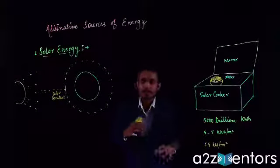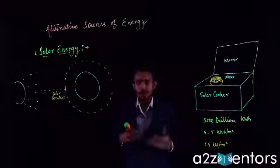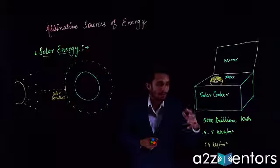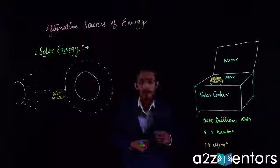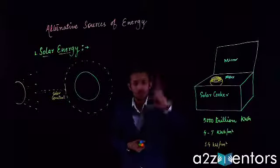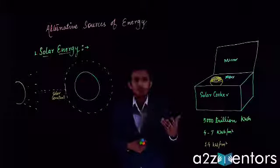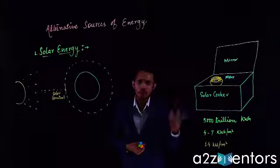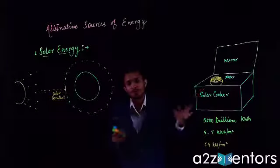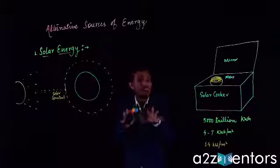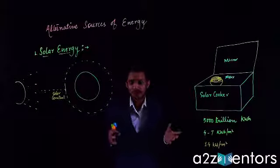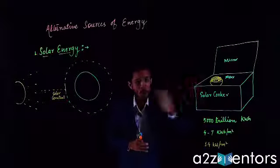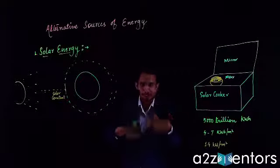This is a basic example of how we can use solar energy at home. Nowadays, more advanced versions of solar cookers are coming, and solar water heaters are used to heat water, especially in winters. Solar cookers can be used in winter, summer, or any season when sunlight is available. However, they cannot be used on cloudy or rainy days because the amount of sunlight is not sufficient to cook food.